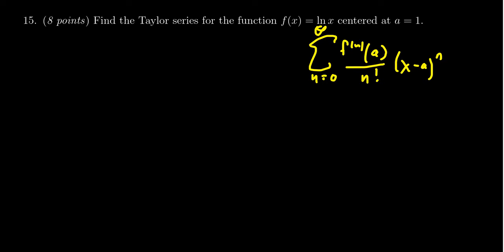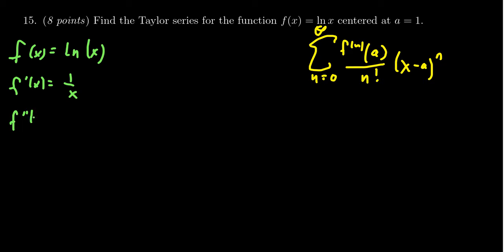So we need to start calculating derivatives of this function. The zeroth derivative is just the function itself, which is the natural log of x. The first derivative gives us one over x. Taking the second derivative — thinking of this as x to the negative one and applying the power rule — we get negative one over x squared.